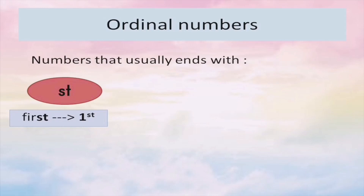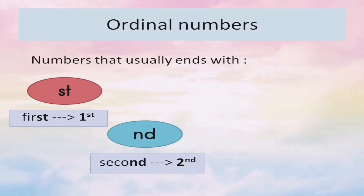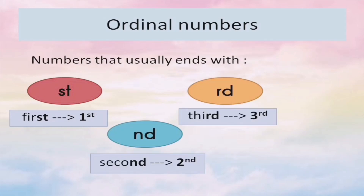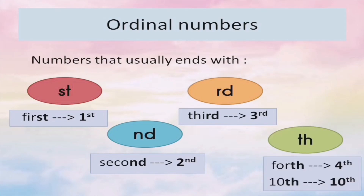What are other ordinal numbers? We're going to learn them today. Ordinal numbers usually end with ST as in 'first,' ND as in 'second,' RD as in 'third,' and TH as in 'fourth,' 'fifth,' 'sixth,' 'seventh,' 'eighth,' 'ninth,' 'tenth.' There are additional letters at the end of the numbers.